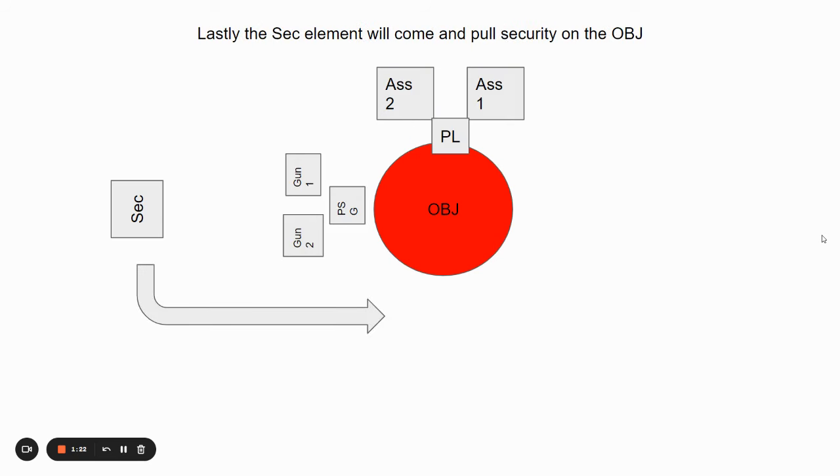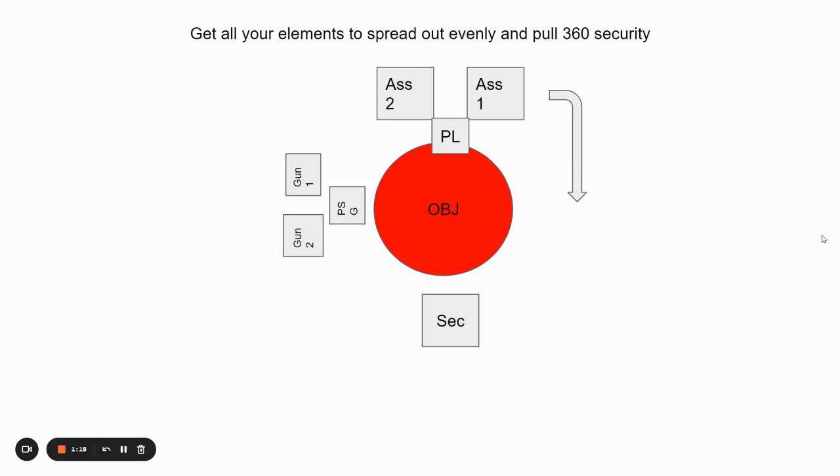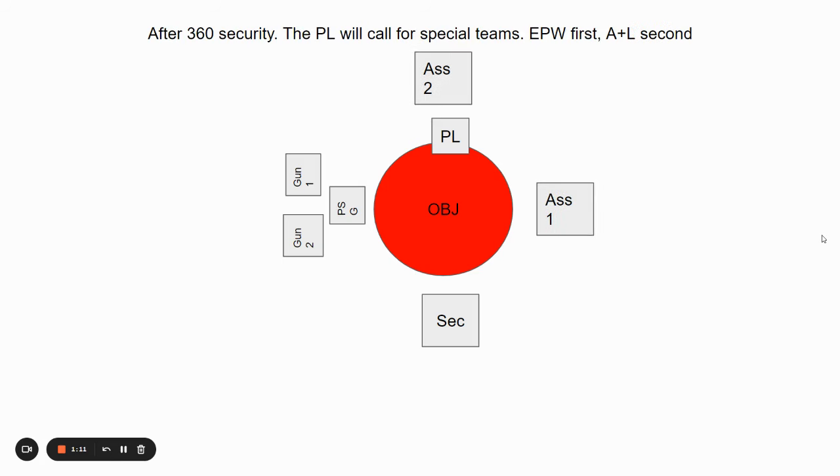Then the support by fire team will turn around and pull rear security. And then lastly, the security element will come and pull security on the objective.